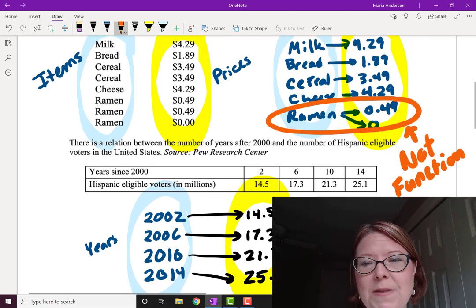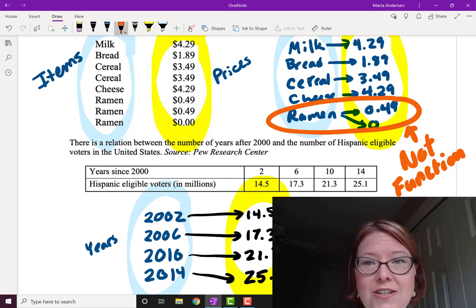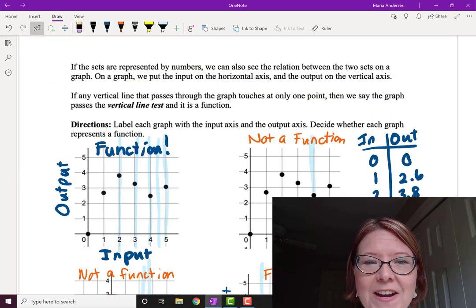a function is a relation where each input value has only one output. And we learned that something like our ramen noodle example where the ramen noodles ring up for two different prices is what causes something to be not a function. Finally,